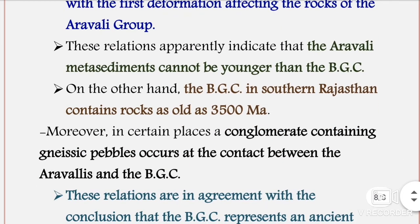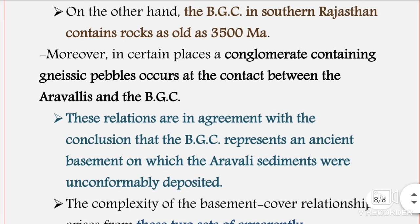These relationships apparently indicate that the Aravalli metasediments cannot be younger than the BGC — they may be older than the Banded Gneissic Complex. The BGC in southern Rajasthan contains rocks as old as 3,500 million years (3.5 billion years). Furthermore, a conglomerate containing gneissic pebbles occurs at the contact between the Aravalli Group and the Banded Gneissic Complex.